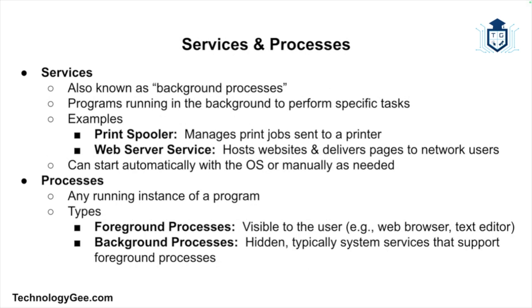Another important component of the operating system is how it manages services and processes. Services, sometimes called background processes, are programs that run in the background to perform specific tasks. For example, the print spooler manages print jobs sent to a printer, and the web server service hosts websites and serves pages to users. Services can start automatically with the operating system or be restarted manually. A process is any running instance of a program. There are two main types: foreground processes, which are visible to the user like a web browser or text editor, and background processes, which are hidden from the user and often support foreground processes. By managing services and processes effectively, an operating system can ensure multiple tasks are performed simultaneously without disrupting the user experience.